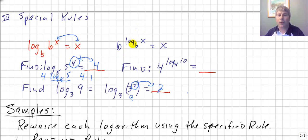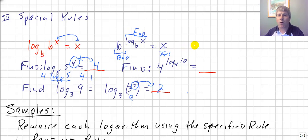Our second special rule says b raised to log base b of x is equivalent to x. This is exponential form — b is our base, this is an exponent, which equals our answer. If I rewrite this in logarithmic form, I'd have log base b of x equals log base b of x, which tells us the x's are the same.